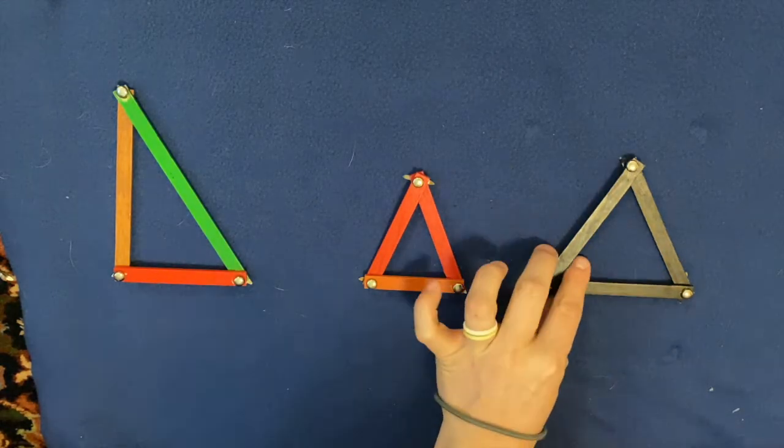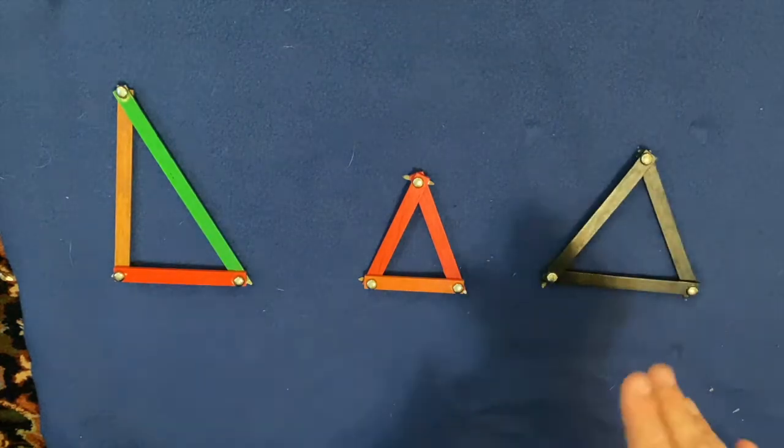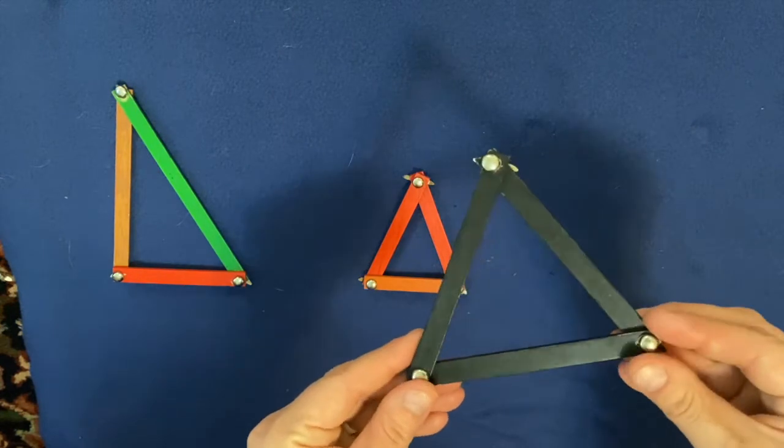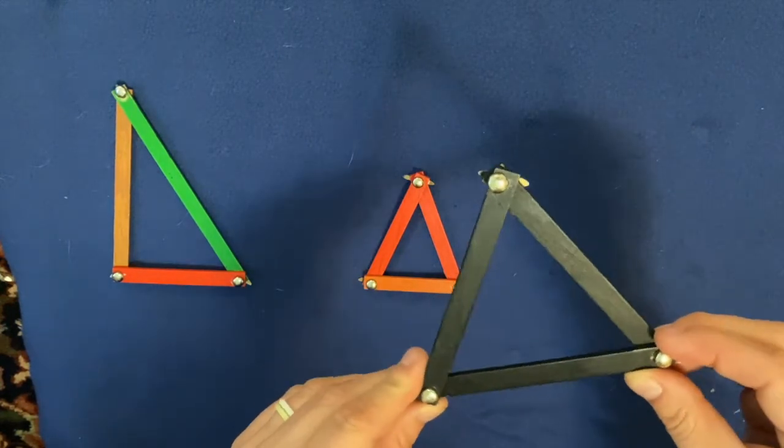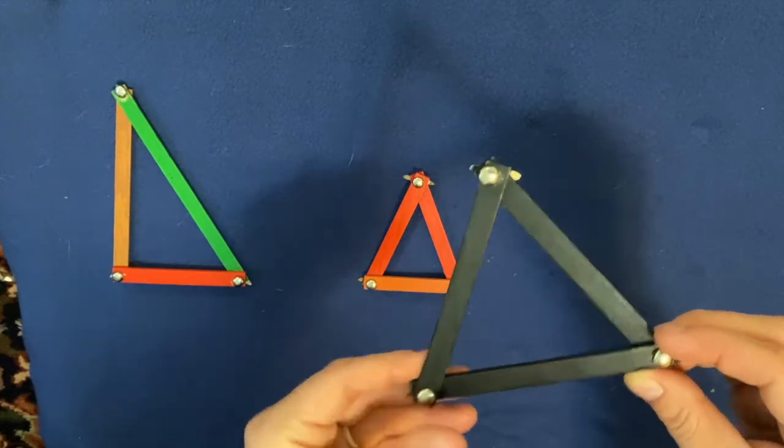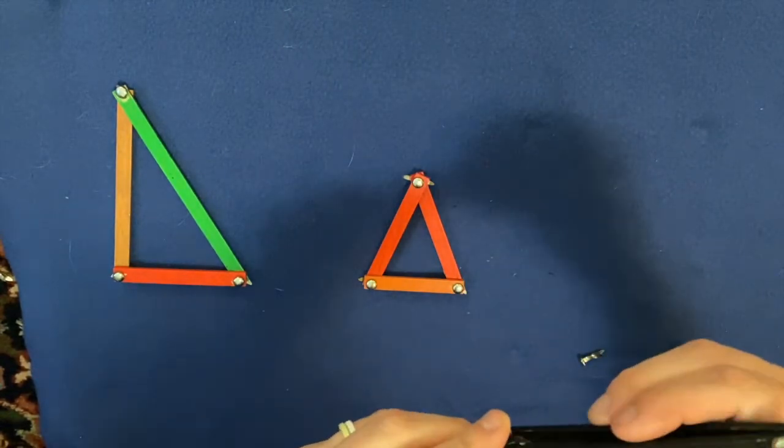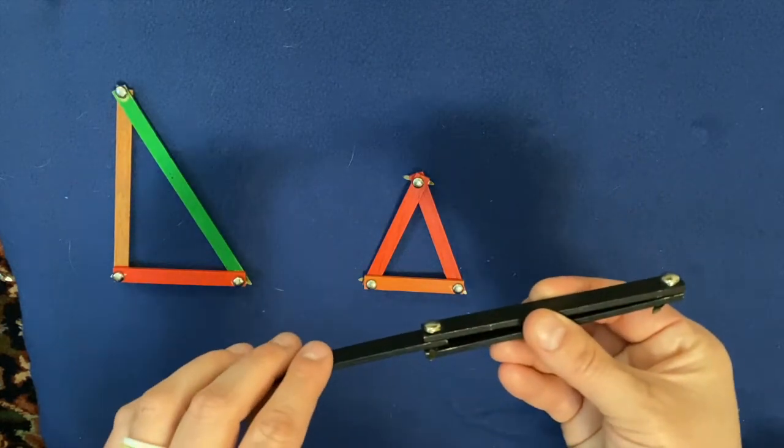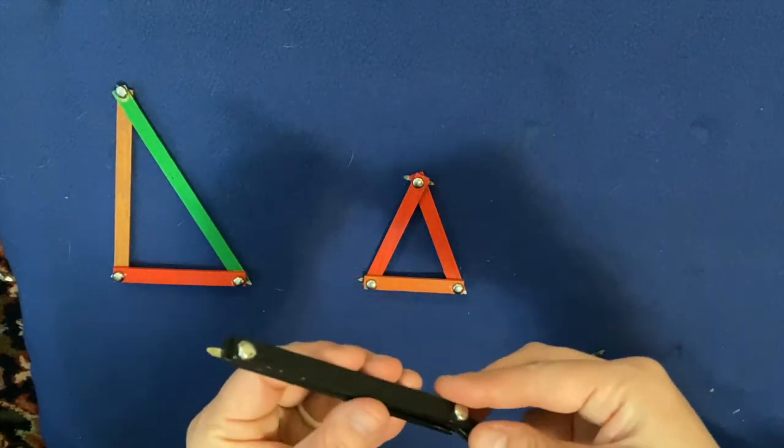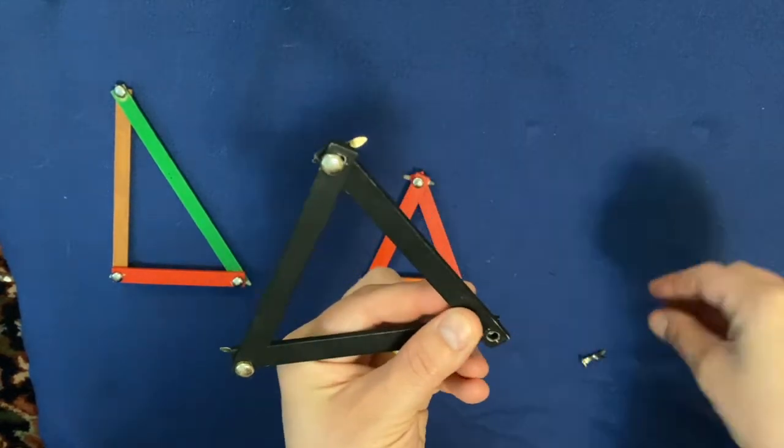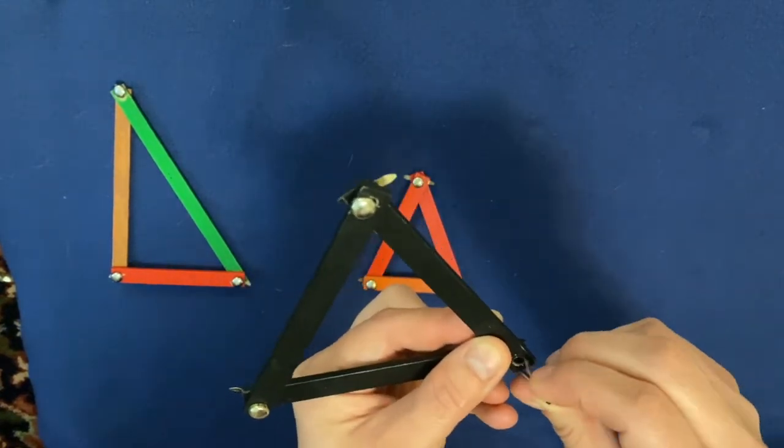So let's start with this triangle here. Let's take a look at our black triangle right here. This triangle has three sides that are all the same length. I'm going to show you that. So you see this one is the same and this one is the same. So all three of these sides of the triangle are the same length.